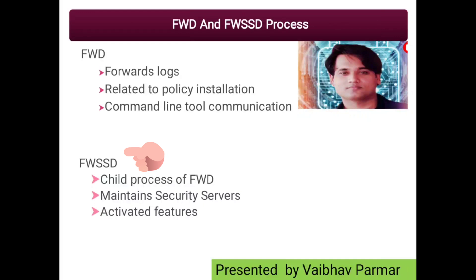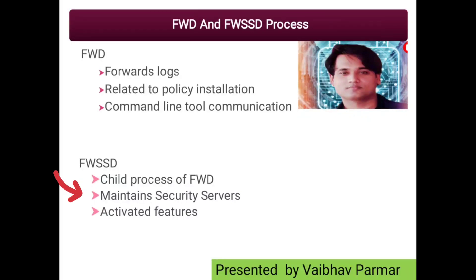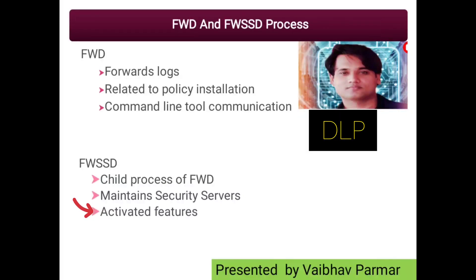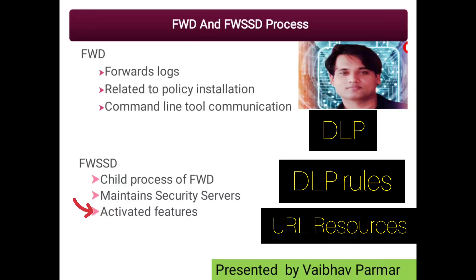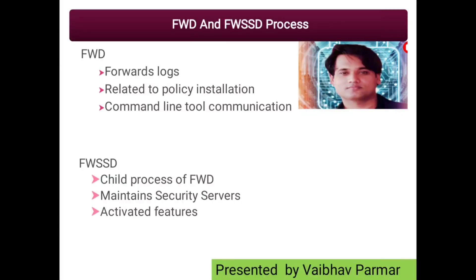The next process is FWSSD. FWSSD is a child process of FWD and is responsible for manipulating the security servers. FWSSD is invoked whenever you activate features such as DLP, corresponding rules with DLP, URL resources, SMTP resources, or authentication. Basically FWSSD is a child process of FWD and performs many features.